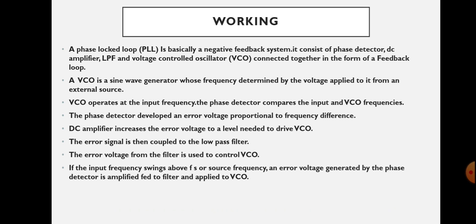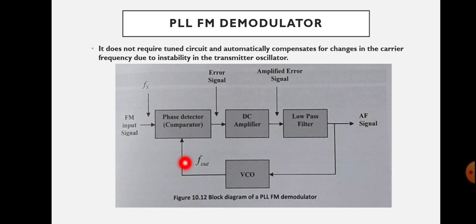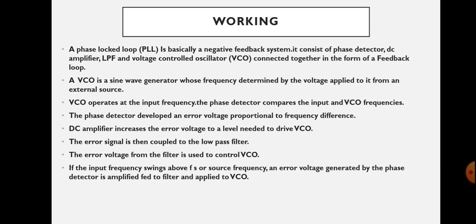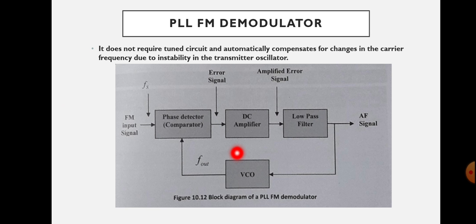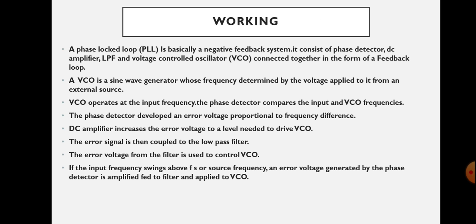The PLL is a negative feedback system, meaning the feedback signal is subtracted from the input signal, producing an error signal. The VCO is a sine wave generator whose frequency is determined by the voltage applied to it from an external source. It produces an output frequency F-out depending on the input applied. The phase detector develops an error voltage proportional to the frequency difference between the input FM signal and the VCO frequency.